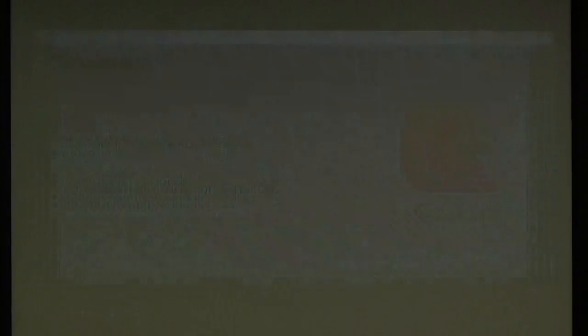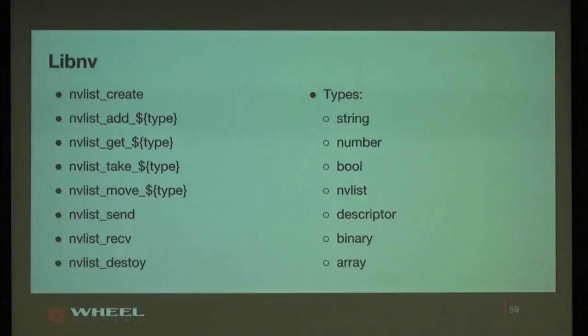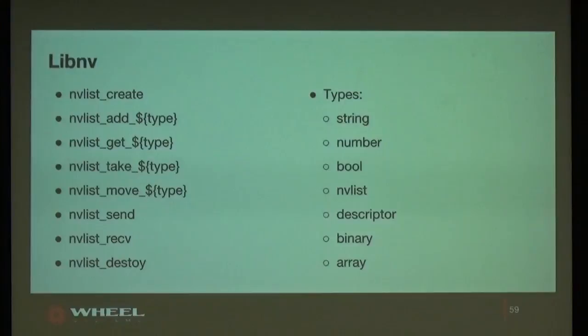libnv is a very simple IPC library. It has basic types like string, number, bool, and we can compose nvlists. What is very important — and not every library provides — is that you can also send file descriptors over the nvlist. We have key functions like add, get, take, and move. Every element is named — for example, nvlist_add_string with a name and a string value. Very simple IPC, very easy to use, and the whole base is very tiny.